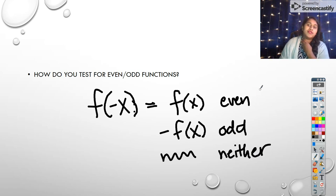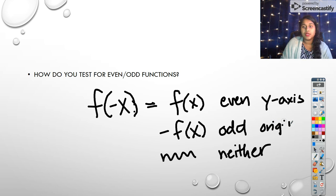Another thing, another definition for even-odd, because if you have a calculator, there's an easier way to see whether something is even or odd. This means that you have symmetry with the y-axis. This means you have symmetry with the origin. And if it's neither, it's either something funky or it's symmetry with the x-axis.